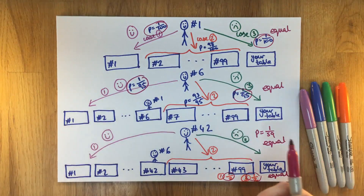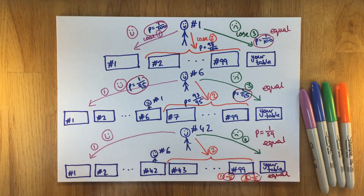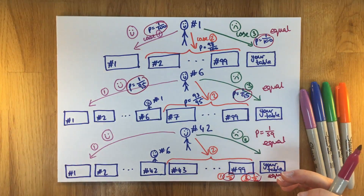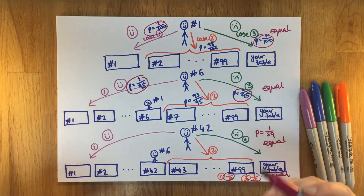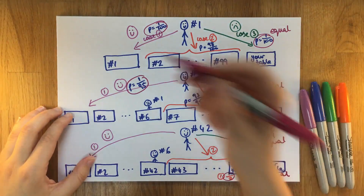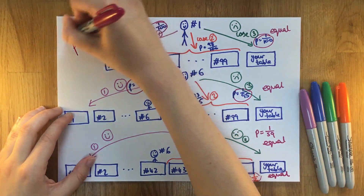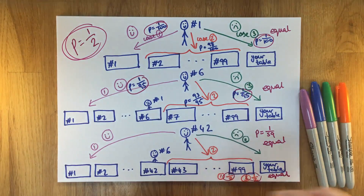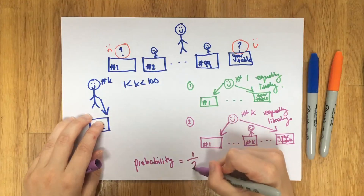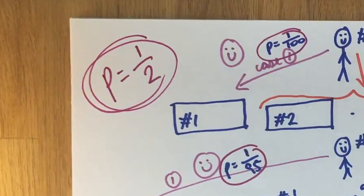We don't know which guest will choose case one or case three, but we know that exactly one of them will — because both table one and your table can't both be taken simultaneously. For every single guest, there's equal probability of choosing case one or case three. So the overall probability is a half that case one occurs and you get your table. In the hundred-table example it's not the number of tables that's important — what's really important is that because of the random seating, every guest has an equally likely probability of choosing table number one compared to your table, and this equal probability leads to the overall probability being a half.